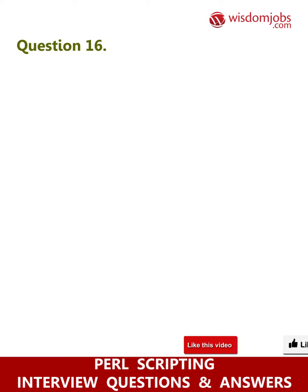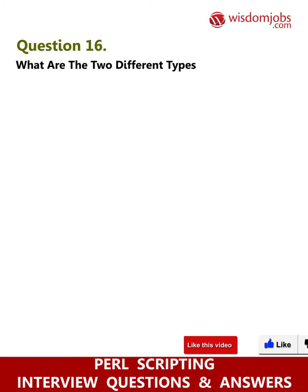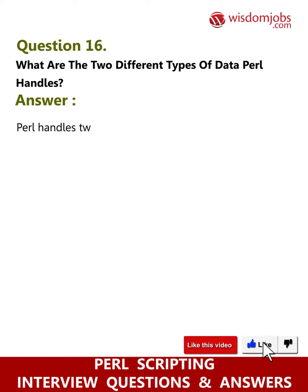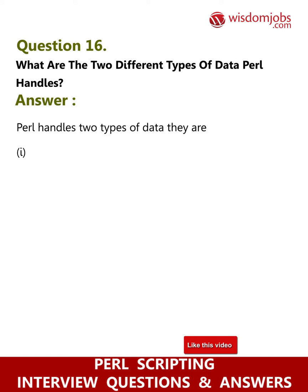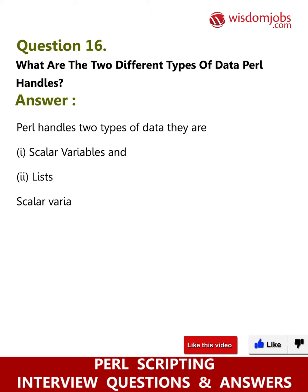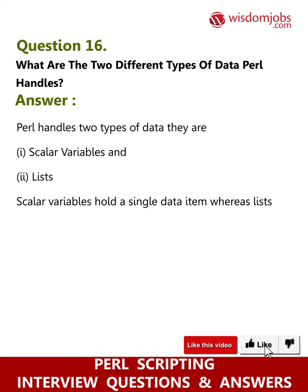Question 16: What are the two different types of data Perl handles? Answer: Perl handles two types of data. They are: i) scalar variables, and ii) list. Scalar variables hold a single data item, whereas lists hold multiple data items.